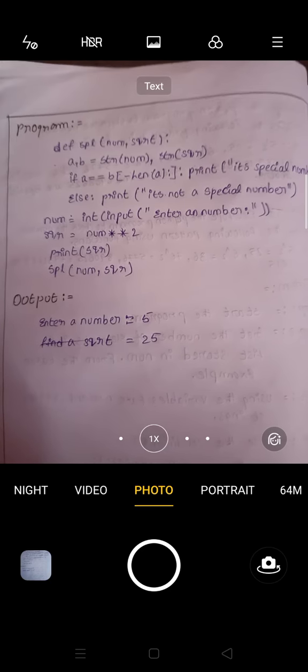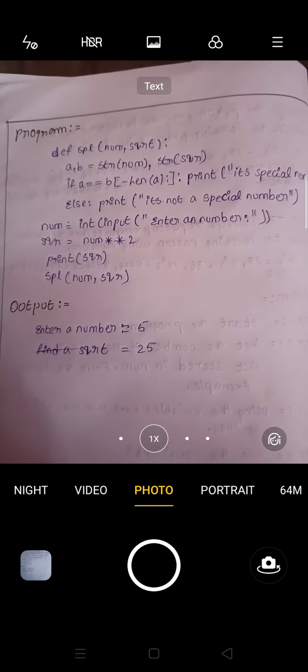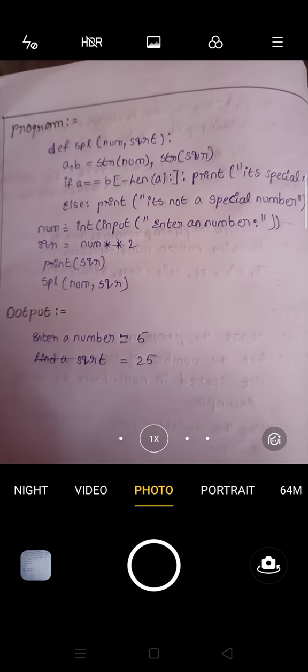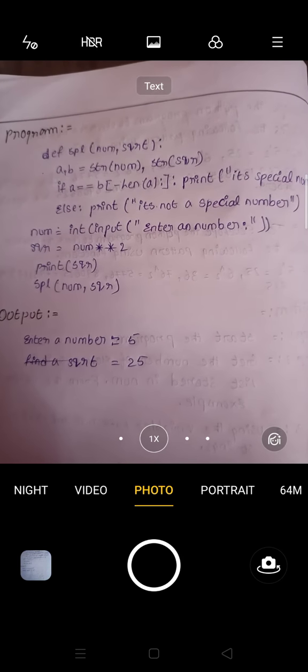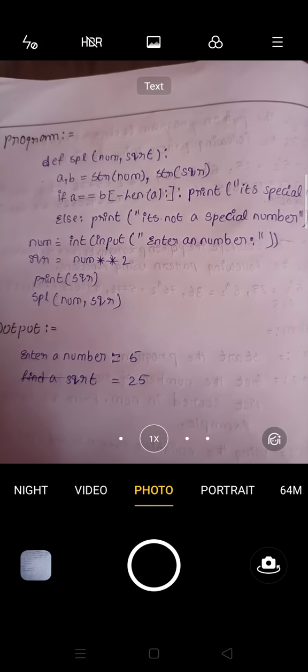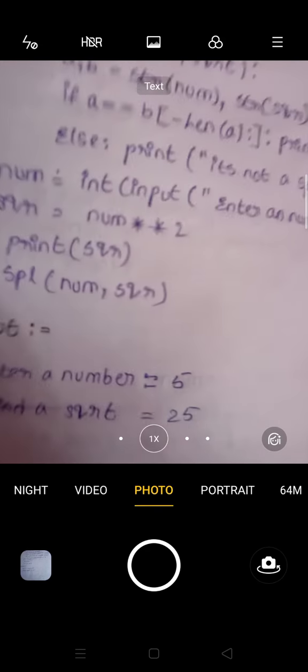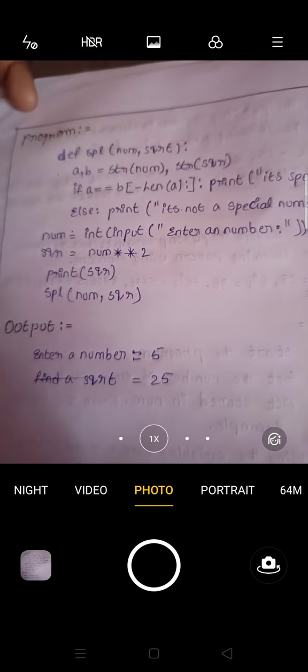After that, take the same value in the num variable and multiply by taking square root as a variable. Print square root spl of num, square root.